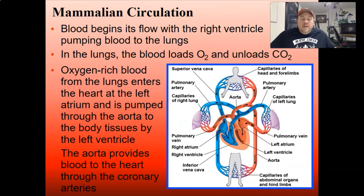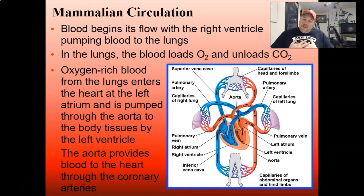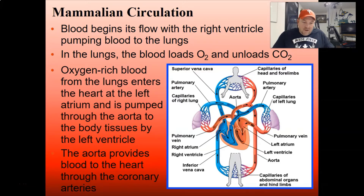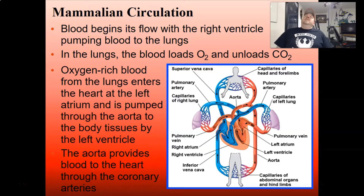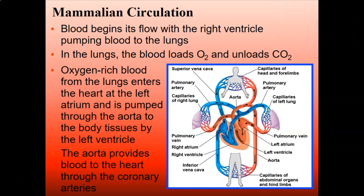For mammalian circulation, it's important to understand which side is which in the heart. You have four chambers with two atria on top and two ventricles on the bottom. The right side of your heart is the right side, and the left is the left. But if you're looking down at a heart placed on a table, it's going to be switched. The easiest way to tell is by looking at the left ventricle, which has a very thick muscular wall.